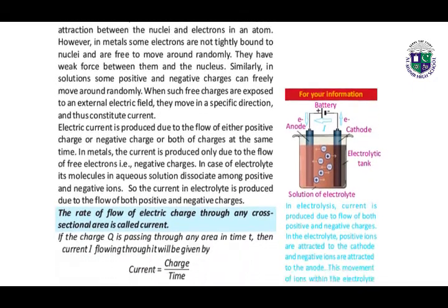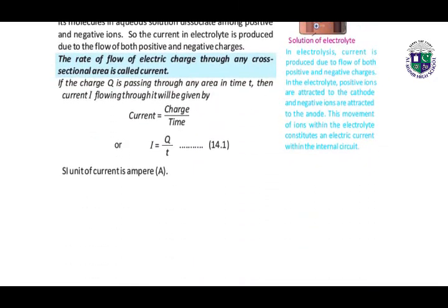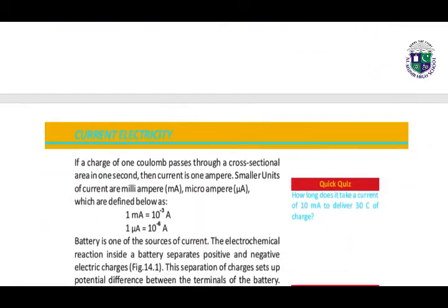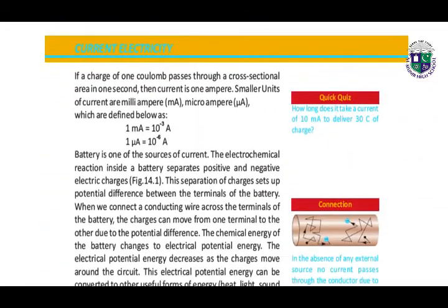Look at the definition of electric current. The rate of flow of electric charge through any cross-sectional area is called the current. Its formula is: current is equal to charge over time. We represent current with I, charge Q, and time T. The SI unit is the ampere, denoted by A, capital letter A.